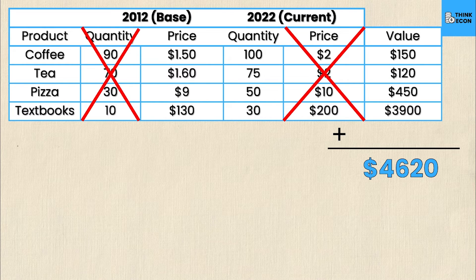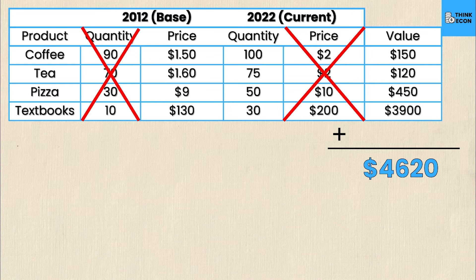If you remember our other video on nominal GDP, the nominal GDP for these same goods was higher. Typically nominal GDP will be higher than real GDP, and that makes sense because prices generally increase over time. As you can see, the 2022 prices are all higher than the base year prices. This won't always be the case, but you can expect real GDP to be a bit lower than nominal GDP in most cases.